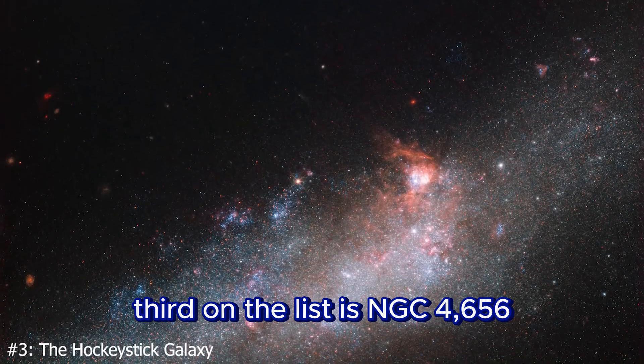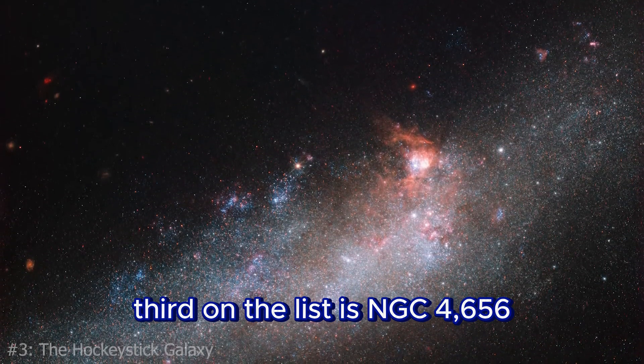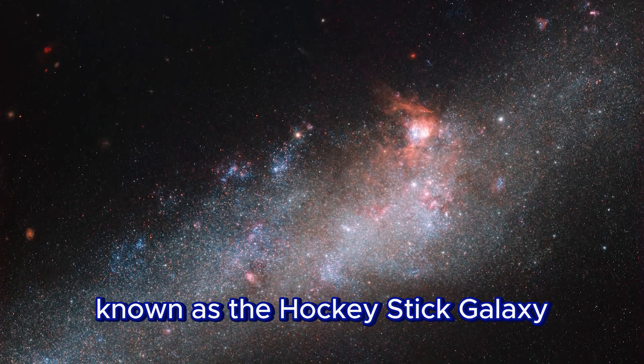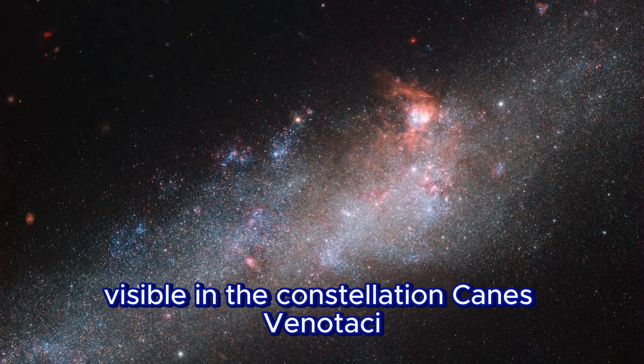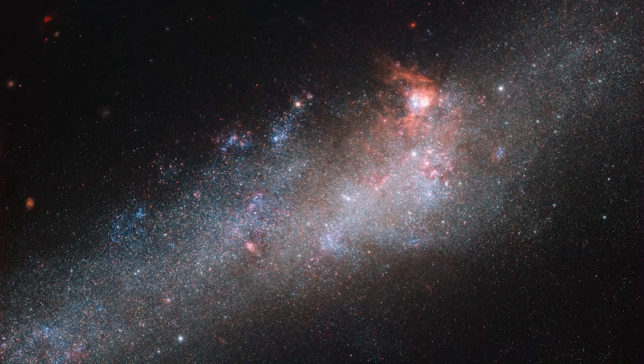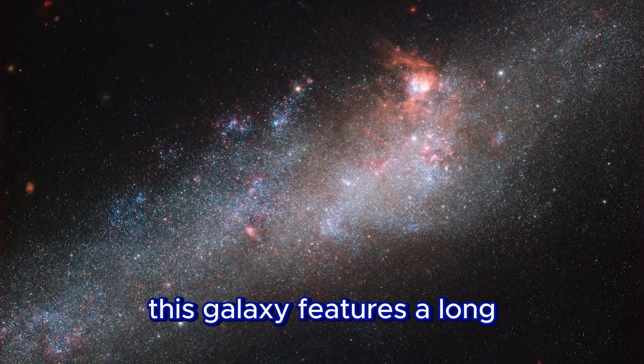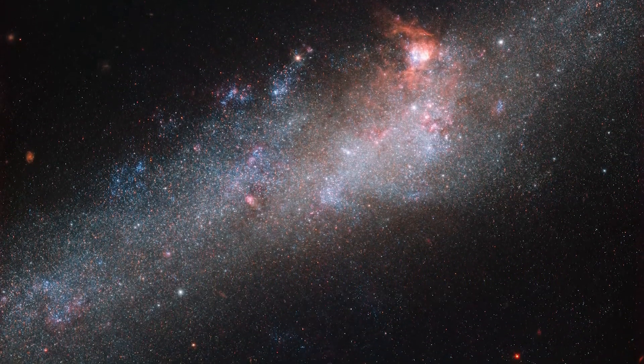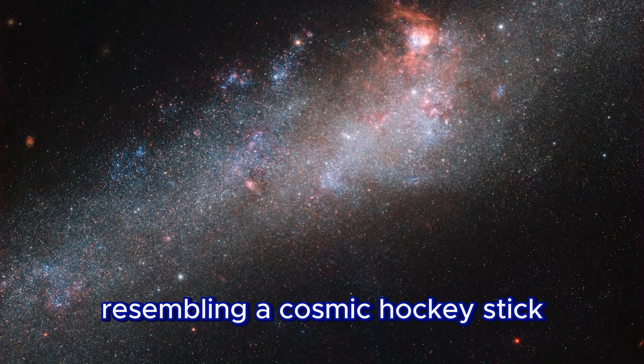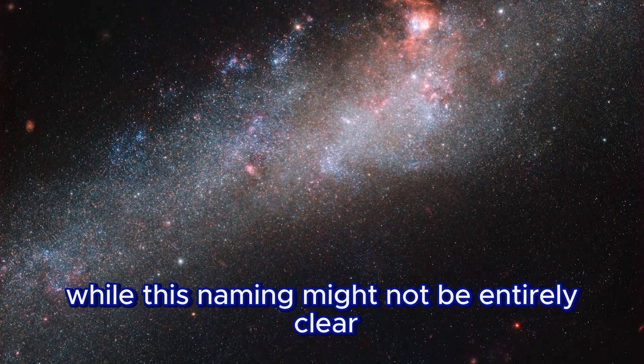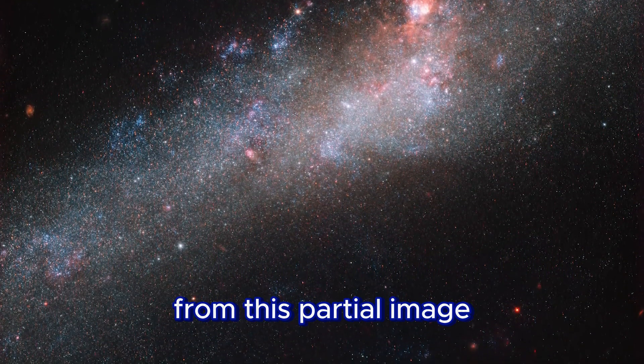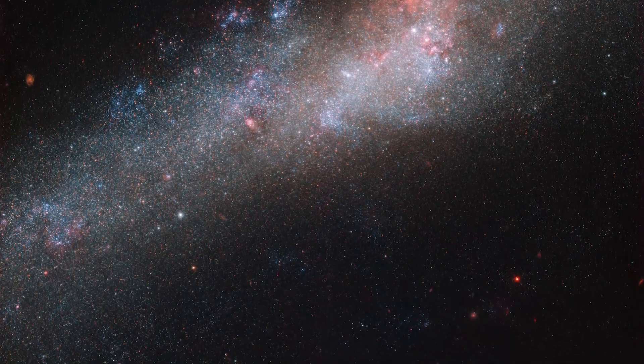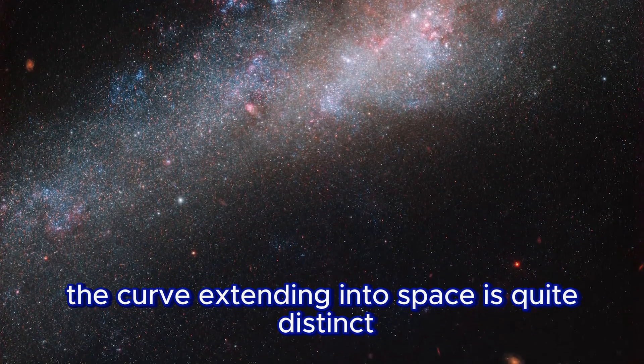Third on the list is NGC 4656, known as the Hockey Stick Galaxy. Visible in the constellation Canes Venatici, this galaxy features a long, twisted bar structure curving out into space, resembling a cosmic hockey stick. While this naming might not be entirely clear from this partial image showing only the bright central region of the galaxy, the curve extending into space is quite distinct.